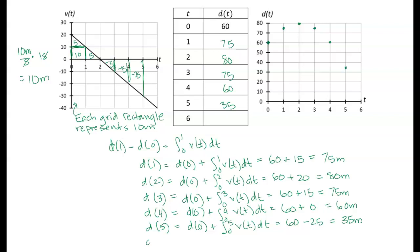One more: t equals 6. We take the initial distance and add the integral from 0 to 6 of the velocity. This next trapezoid is about negative 35. So we have plus 20, then minus 20, then minus 25, then minus 35 — that's a total of minus 60. So we're down at 0 meters, which is ground level — that was our frame of reference. The ball has hit the ground.